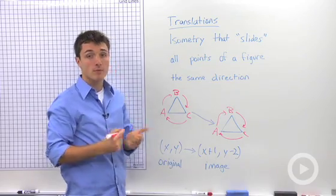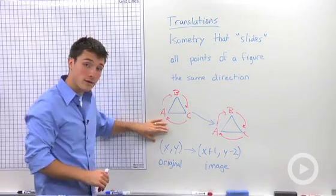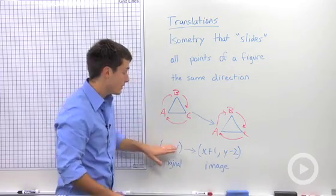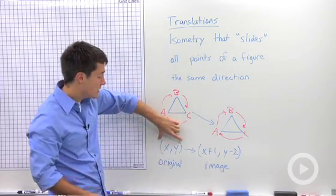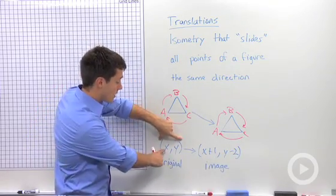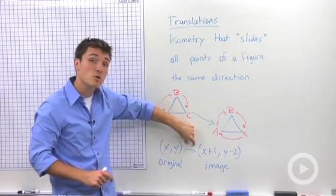But how do we describe a translation to other mathematicians? Well, to do that, we're going to write an expression kind of like this, which says the original coordinates, whatever they are, X and Y, are being mapped onto a new image.